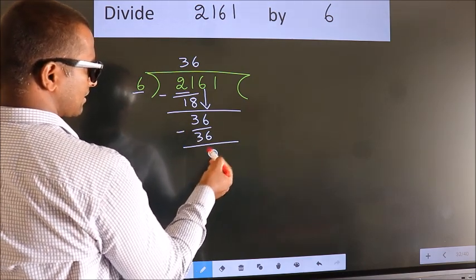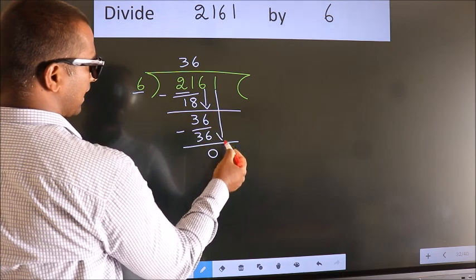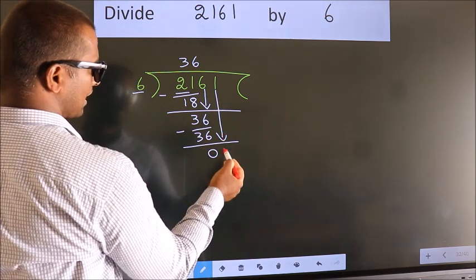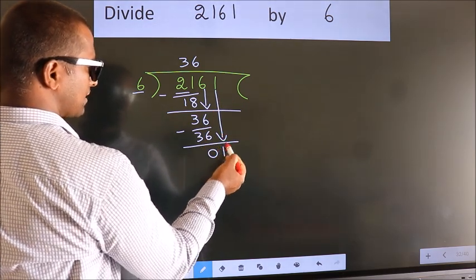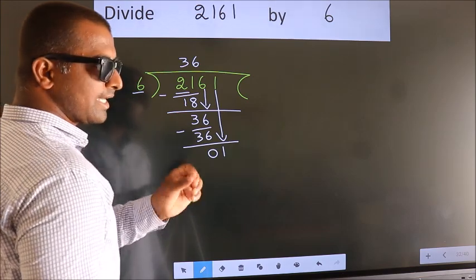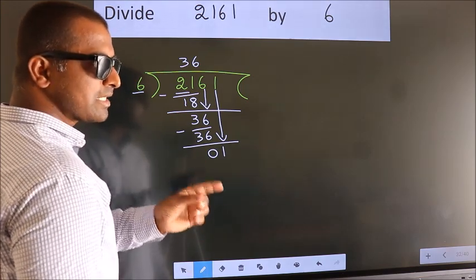After this, bring down the beside number. So 1 down. After this step, the mistake happens. And the mistake is this.